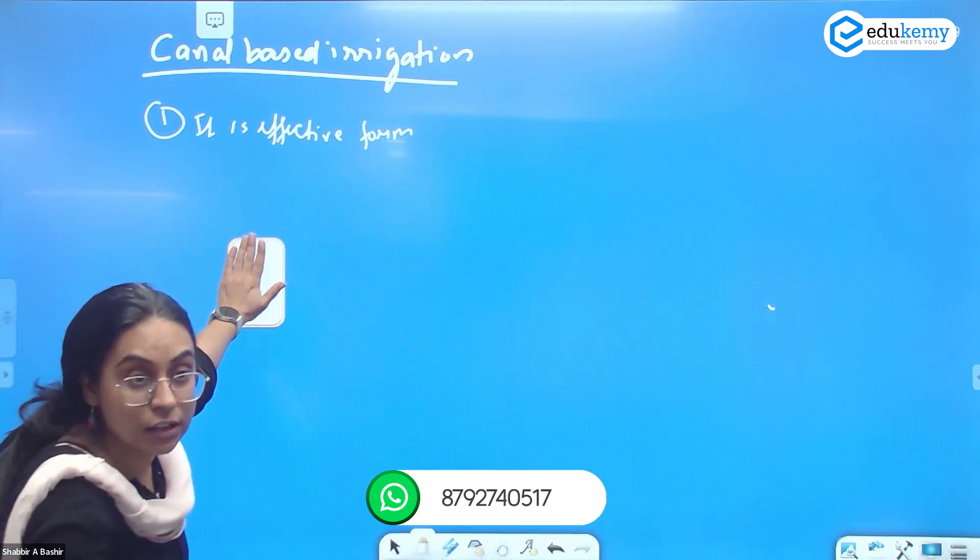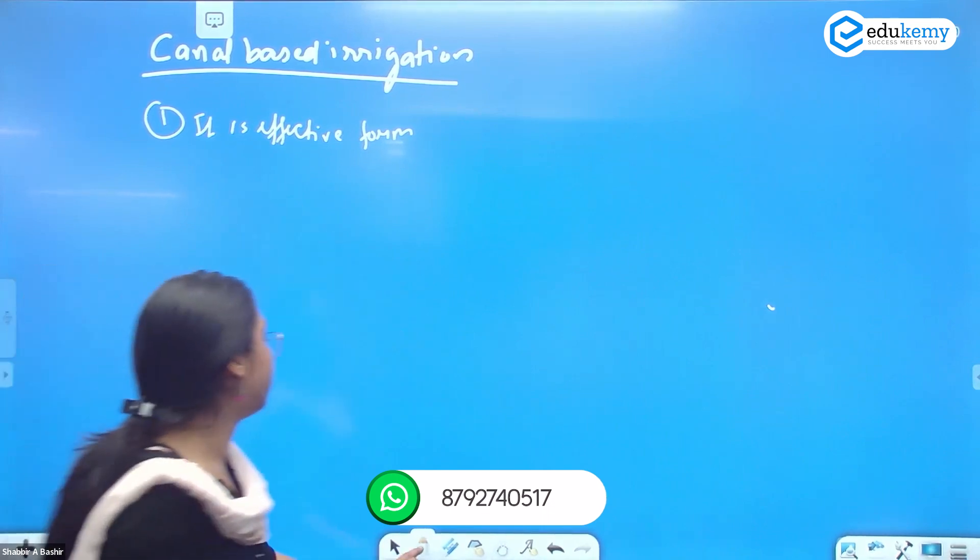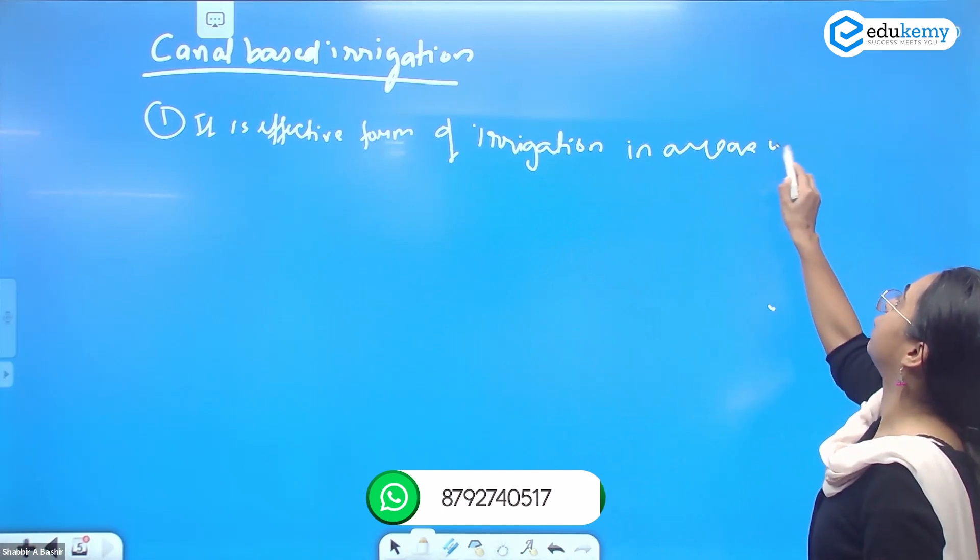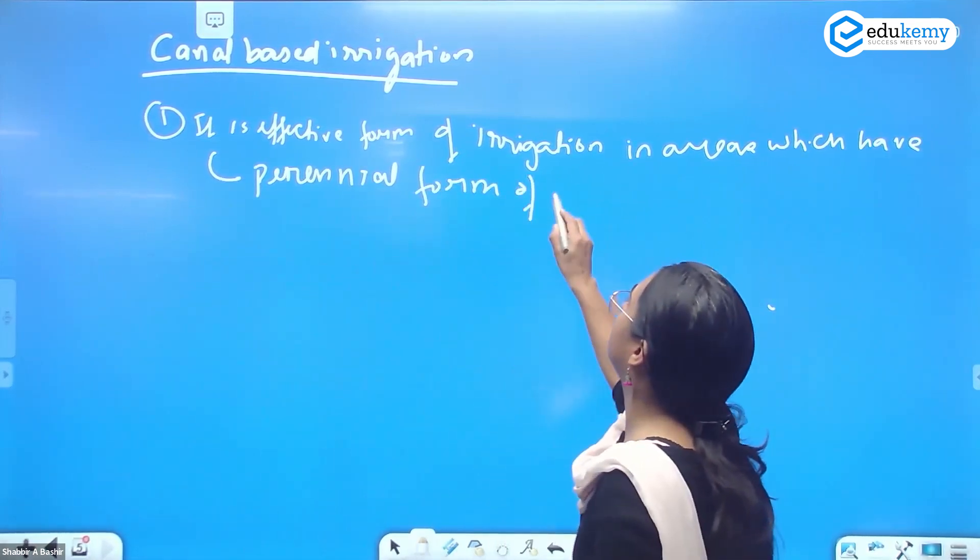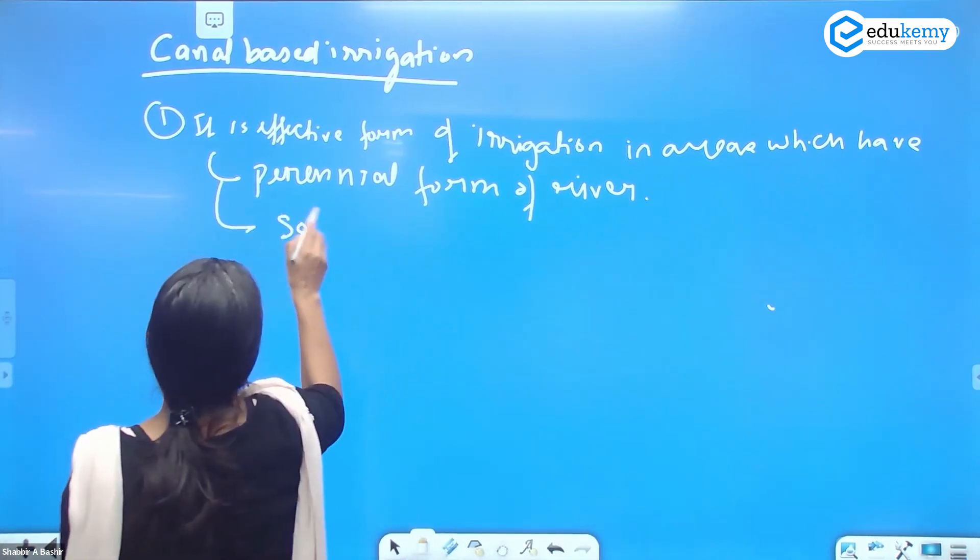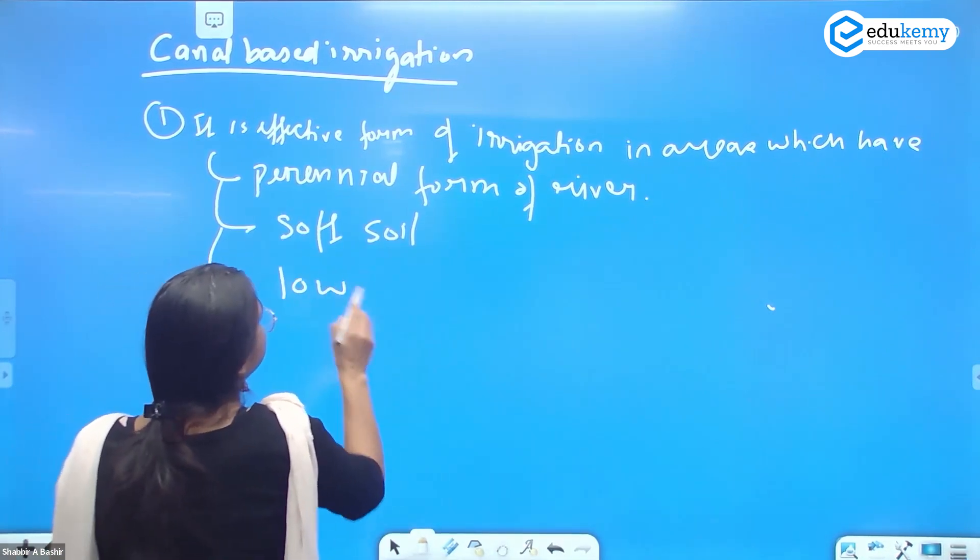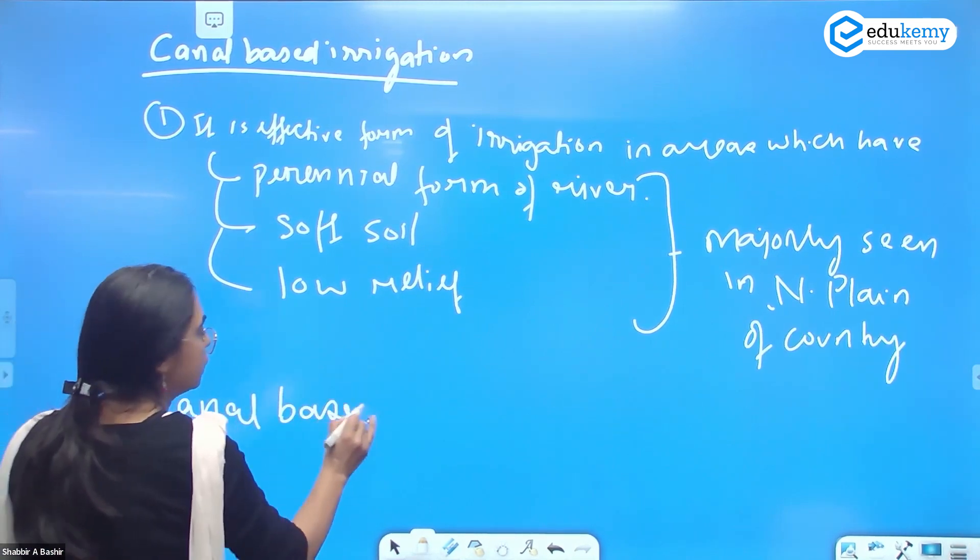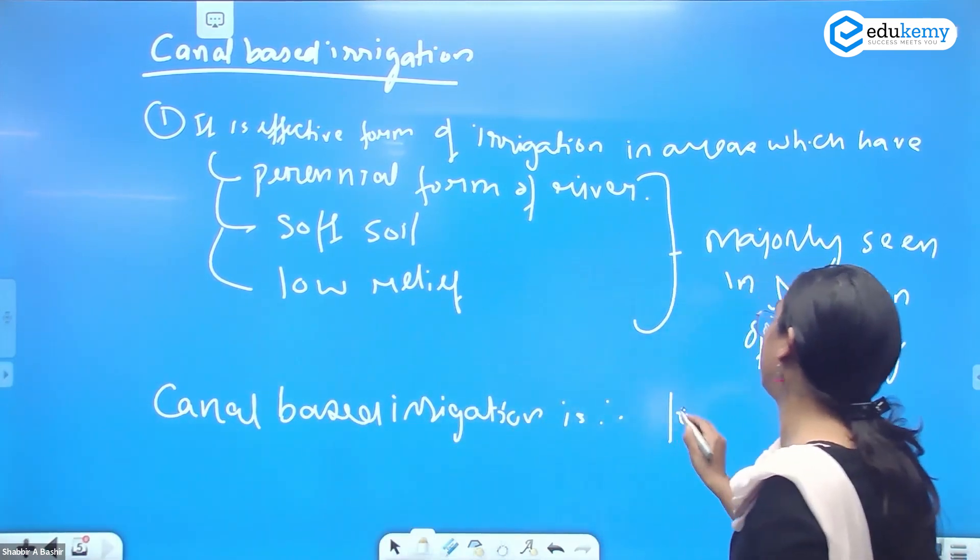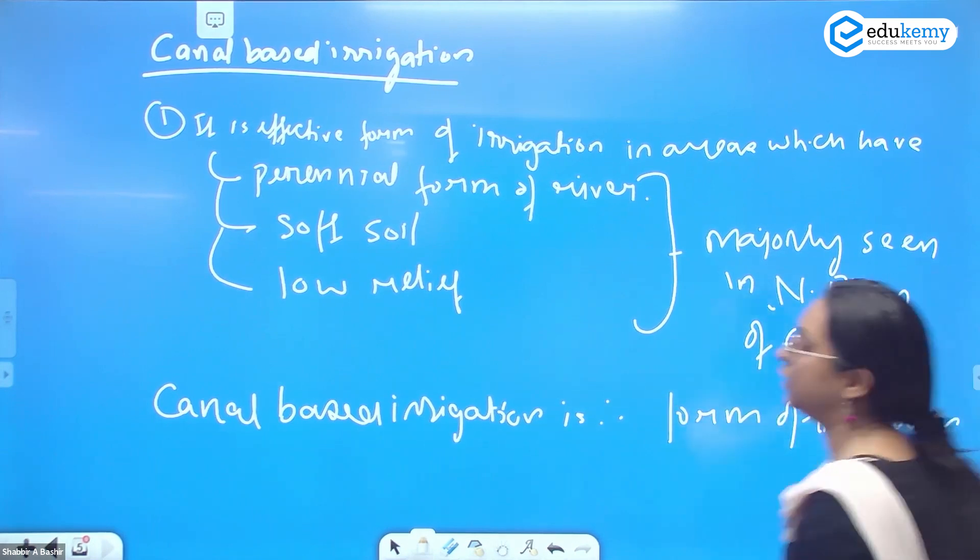Coming back, canal-based irrigation. It is the effective form of irrigation in areas which have a perennial river, soft soil, and low relief. These conditions are majorly seen in the north plain. Canal-based irrigation is therefore practiced in the northern plains.